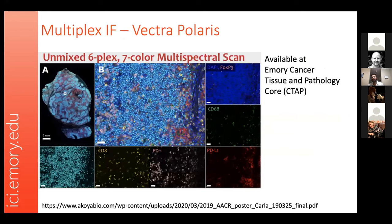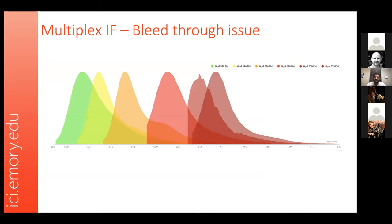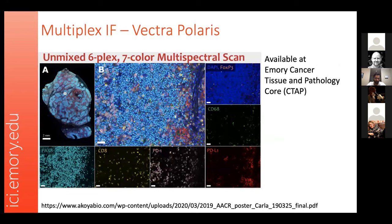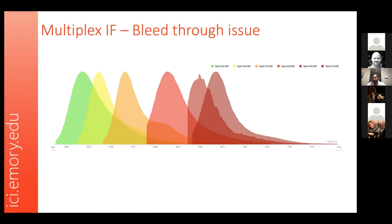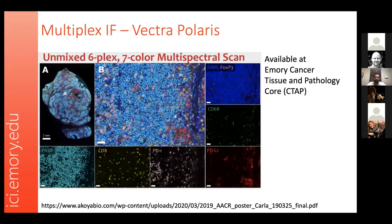At Emory, the Cancer Tissue and Pathology Core has a Vectra Polaris, which many groups are using. It allows six-plex immunofluorescence — up to seven-color multispectral imaging — using Opal dyes. A key challenge with this approach is significant bleed-through between channels, as visible from the emission spectra of the Opal dyes. A customized software from Vectra Polaris is used to determine bleed-through contributions and tease out fluorescence from individual channels.